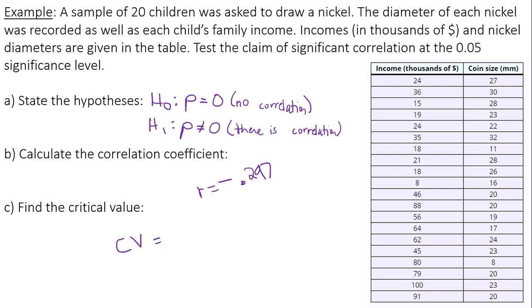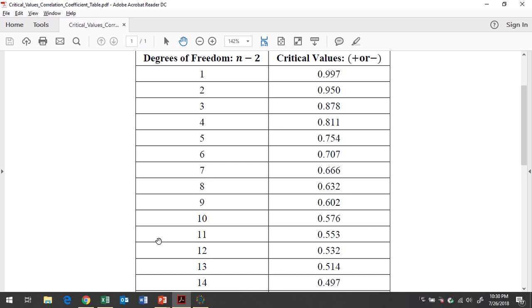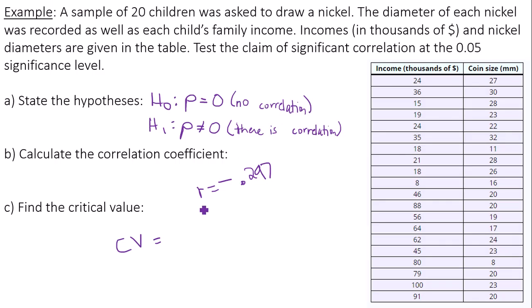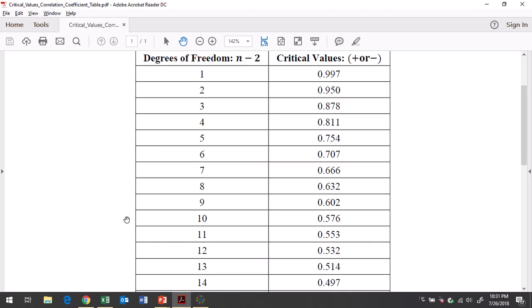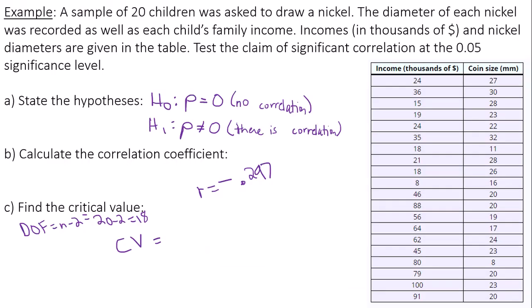Now I need to find my critical value. The best way to find their critical value is by looking at your critical value table for linear correlation. I had 20 pieces of data, and the degrees of freedom would be n minus 2, or 20 minus 2. For this type of test, degrees of freedom is n minus 2, 20 minus 2, which is 18. In our critical value table, we just need to go down to 18, and we have 0.444.